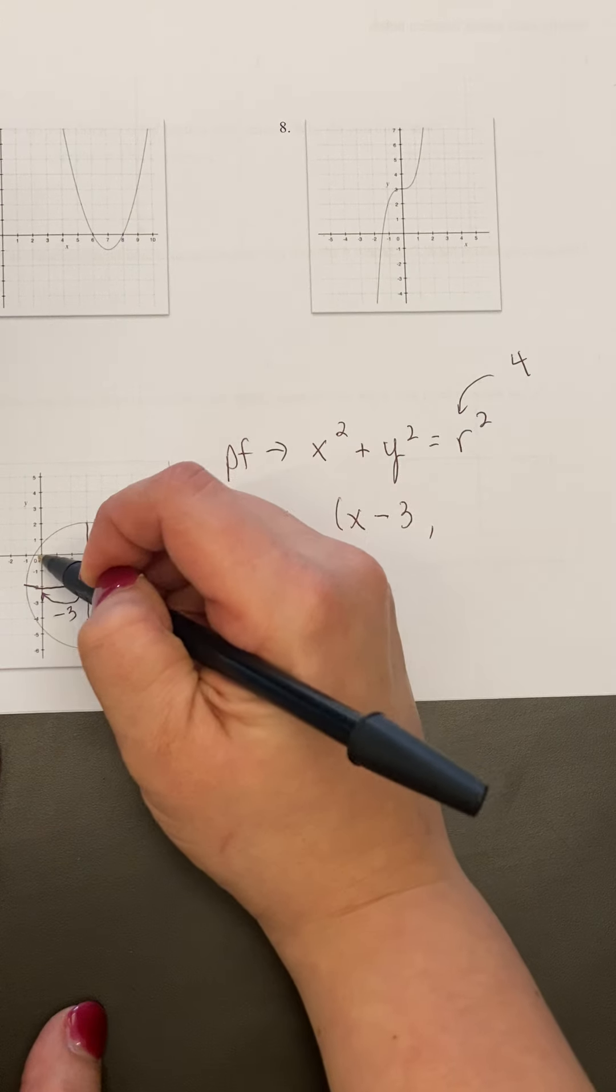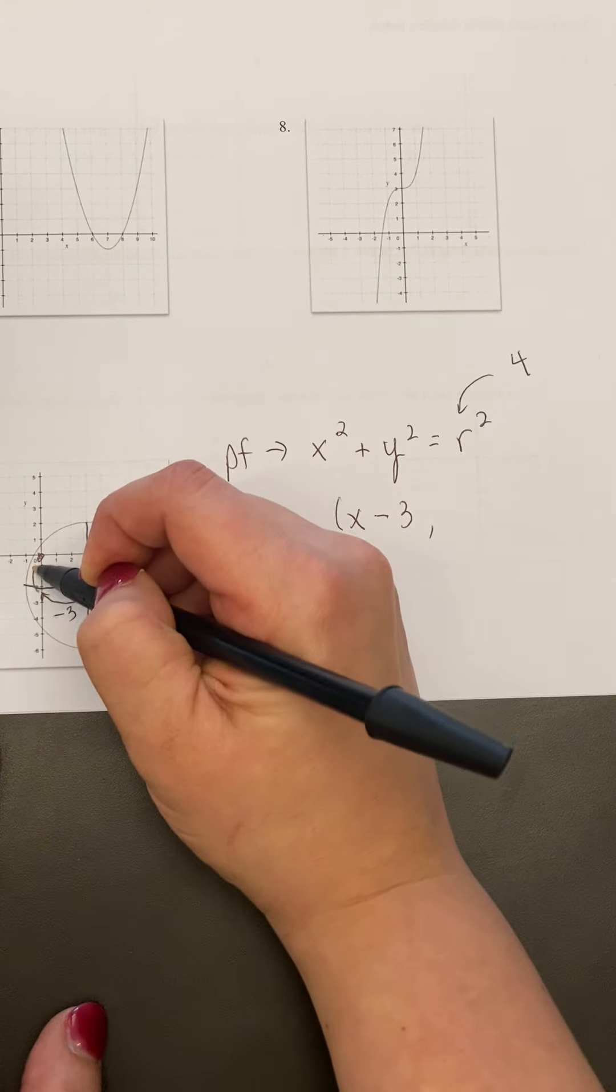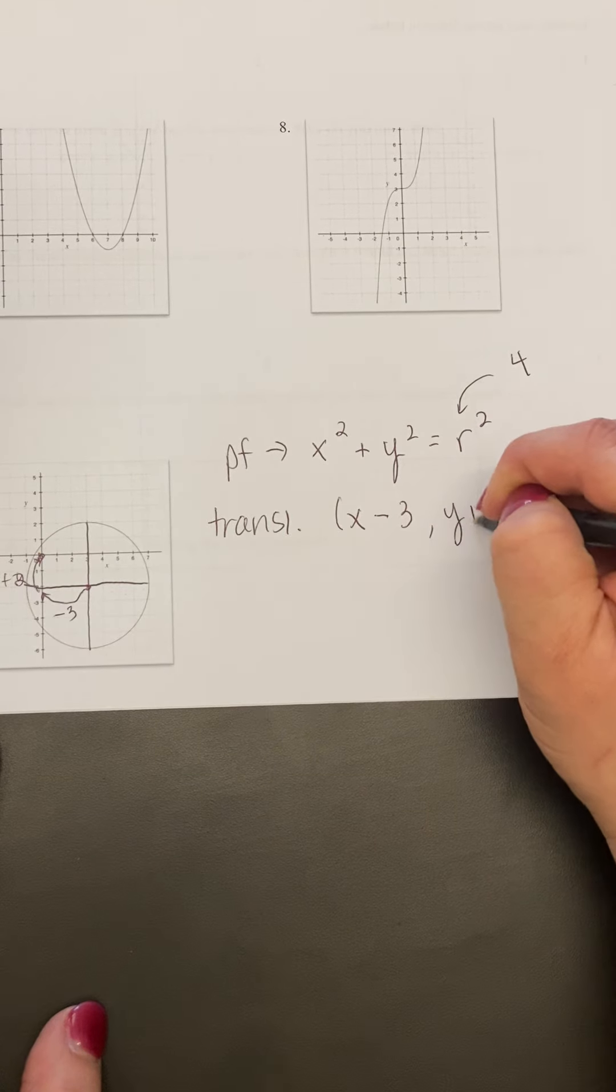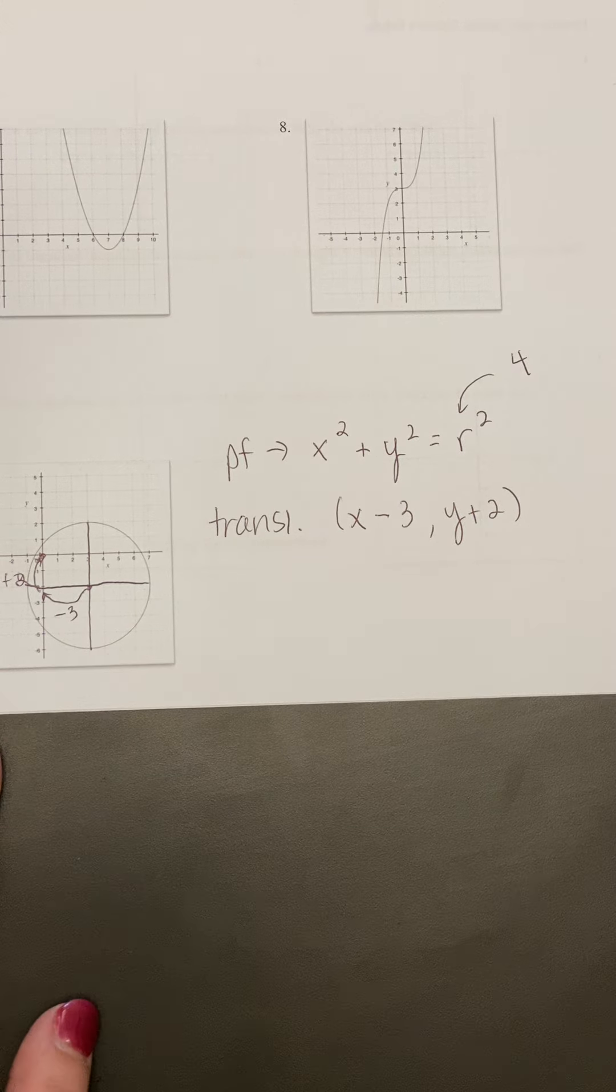But then to get back to 0, 0, I have to move up 2. Well that's in the plus direction. Okay, so there's my translation vector.